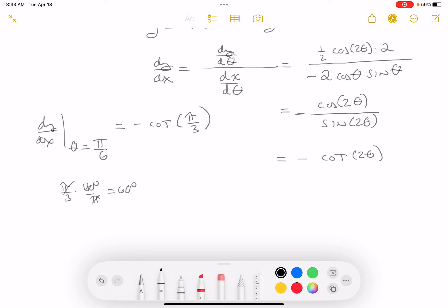I want to write this as -1/tan(π/3). Using the triangle, tan(π/3) = √3, so you get -1/√3.